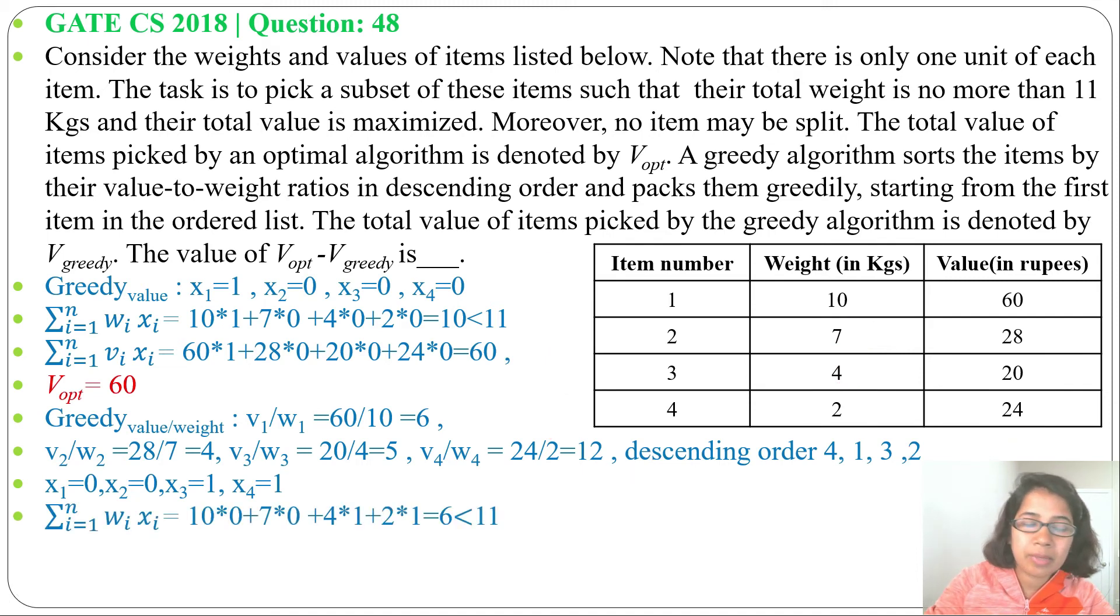Next, total weight: 10×0 + 7×0 + 4×1 + 2×1 = 6. 6 is less than 11. It should be less than or equal to total capacity.